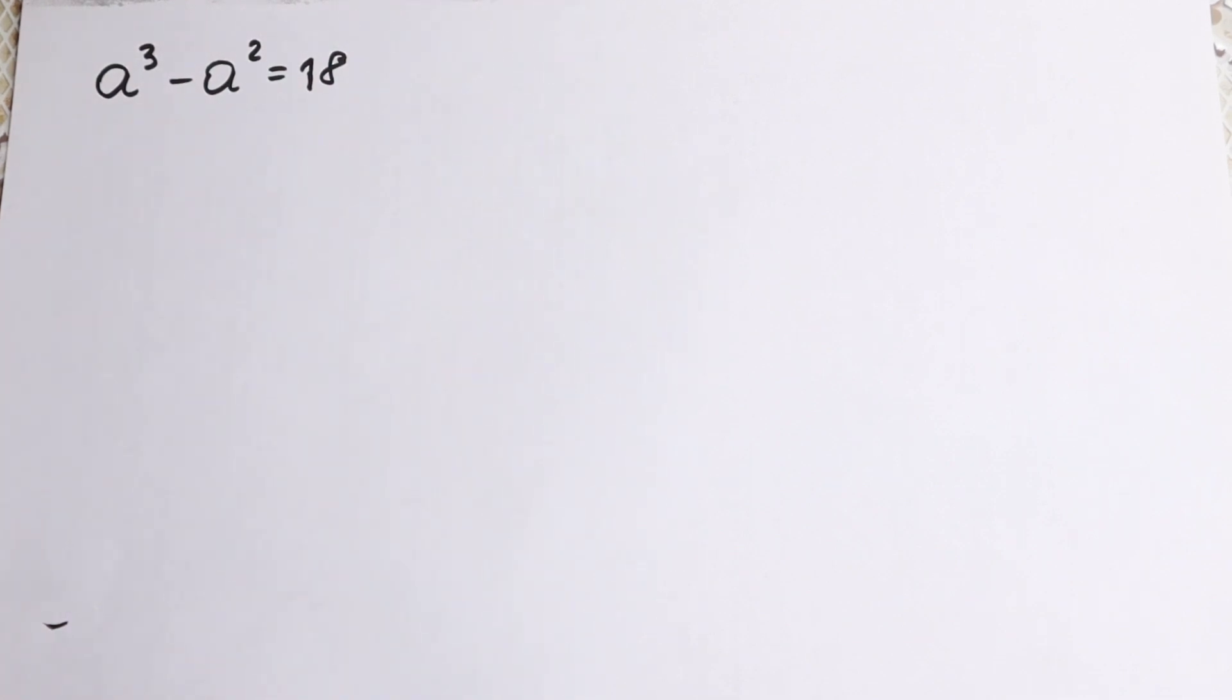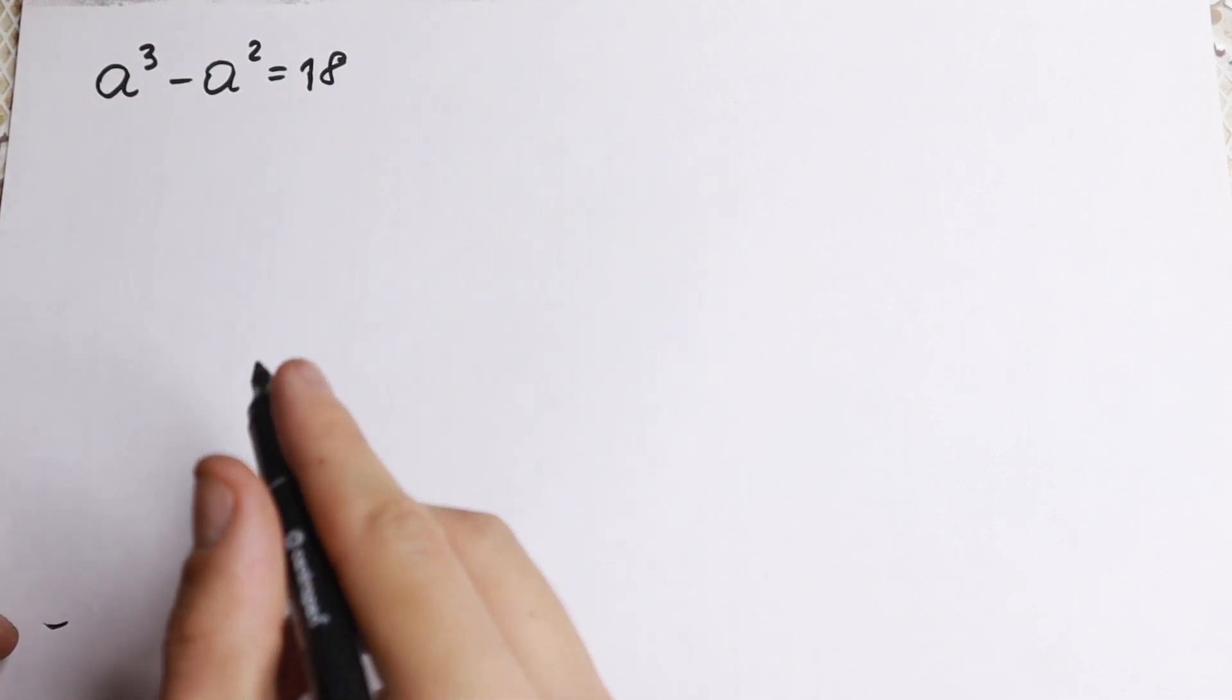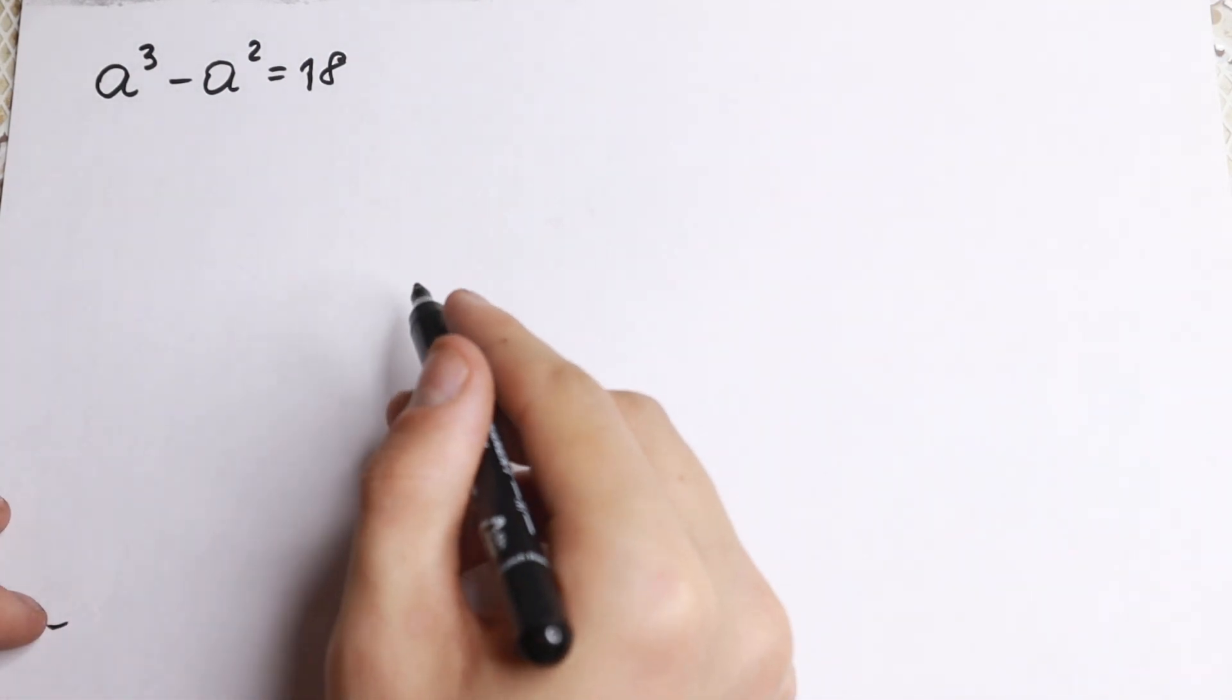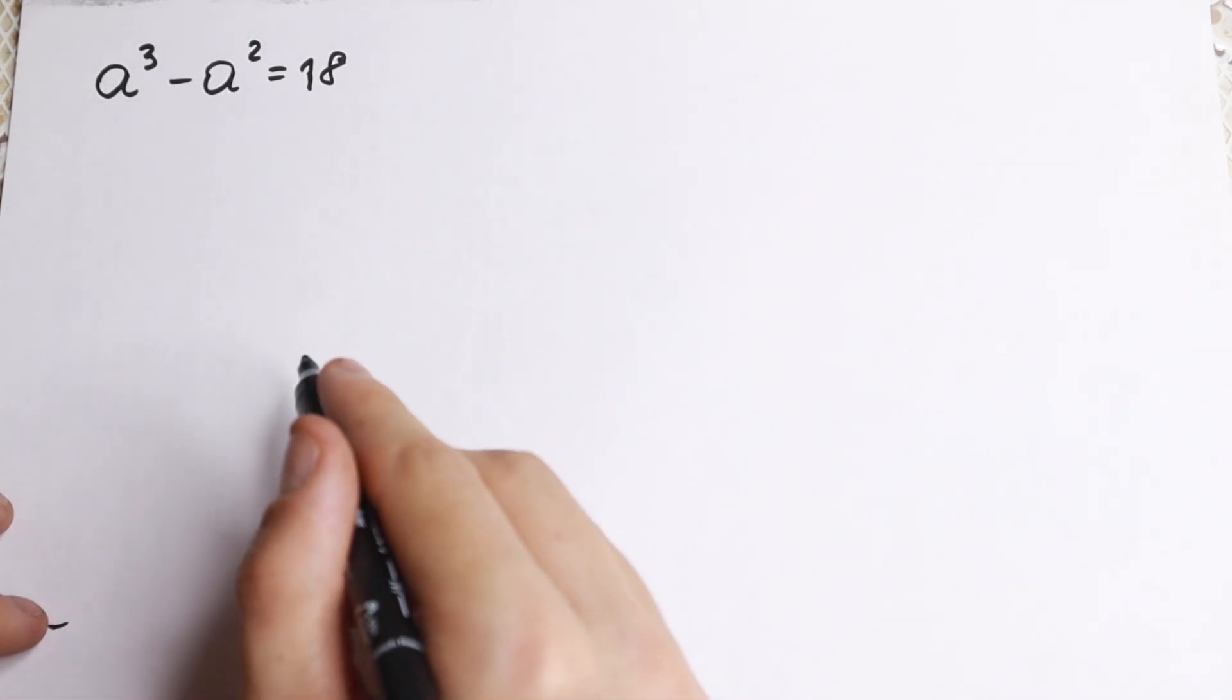Hello everyone! Happy to see you here! Really interesting problem today. We have a³ - a² = 18, and we need to find our a in this problem.